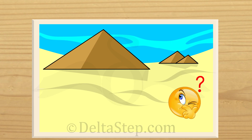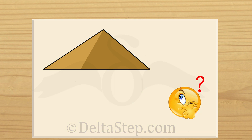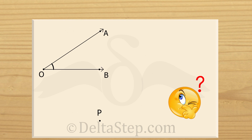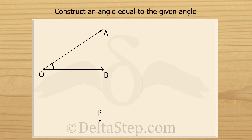Suppose you see a beautiful picture somewhere which you want to replicate and draw on your own. For this you need to make an angle equal to the given angle. Suppose we have an angle, say angle AOB. We have to construct an angle the measure of which is equal to angle AOB at the given point P.